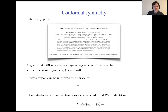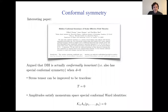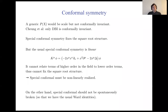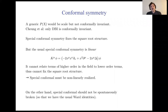A few months ago, there was a paper by Cliff Chung and collaborators arguing that the DBI theory at dimension D equals zero is actually fully conformally invariant — not only does it have scale symmetry, but it has special conformal symmetry. And only the DBI theory has this symmetry, so it's non-trivial and fixes the square root structure. They showed this by demonstrating the stress tensor could be improved to be traceless when D equals zero, and that amplitudes satisfy the standard momentum-space Ward identities from special conformal transformations.